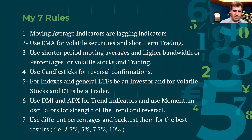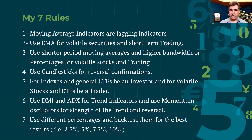Rule six: use DMI and ADX for trend indications. Use momentum oscillators to see the strength of the trend. If there's divergence or you're moving into an overbought situation, that signals a reversal. Combining all of this with candlestick patterns gives you a good setup to take advantage of these indicators.